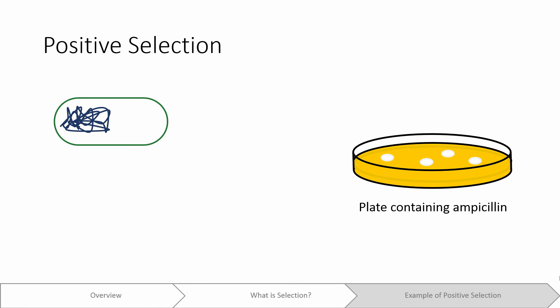The E. coli that did not take up a plasmid die since the ampicillin will kill them. The E. coli that have taken up a plasmid and produced beta-lactamase will survive.